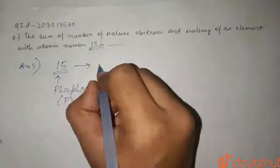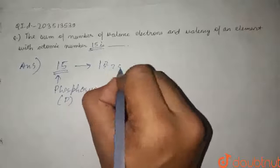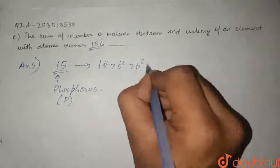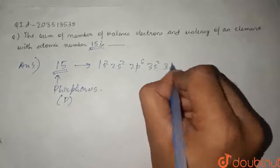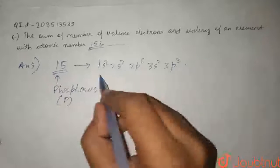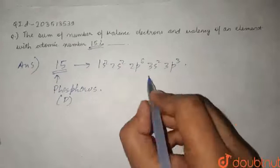If we write the electronic configuration, it will be 1s2, 2s2, 2p6, 3s2, 3p3. This is the electronic configuration.